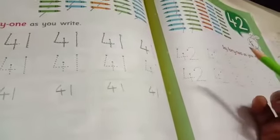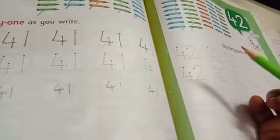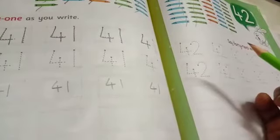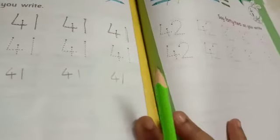Then in which way you can write number 42. So first of all students we can trace the number 42. In this way we can trace the number 42. Okay students? In this way we can trace the number 42.